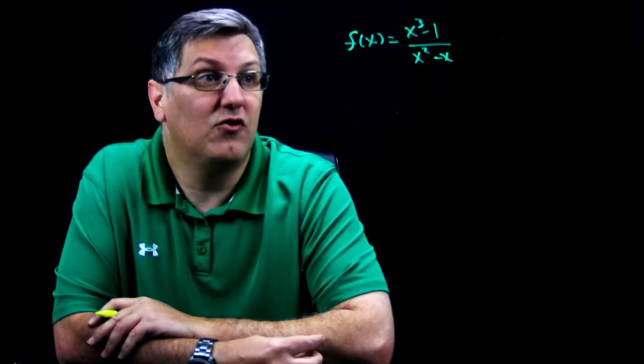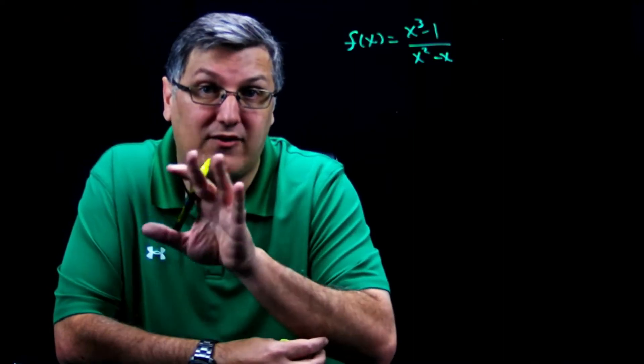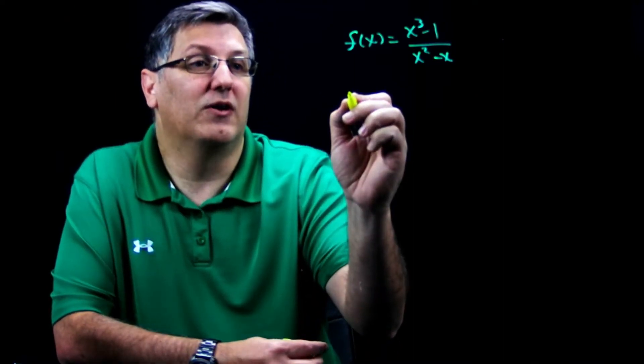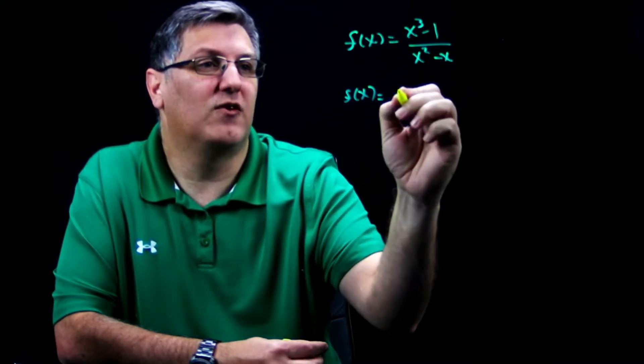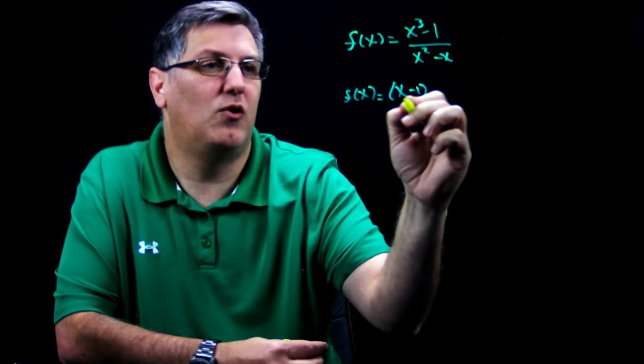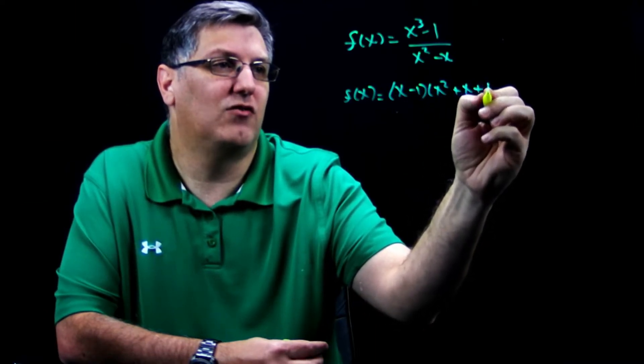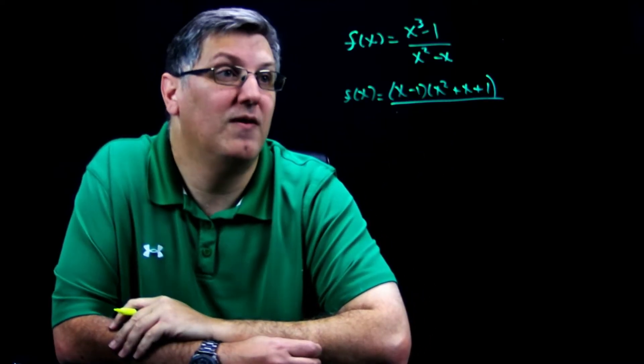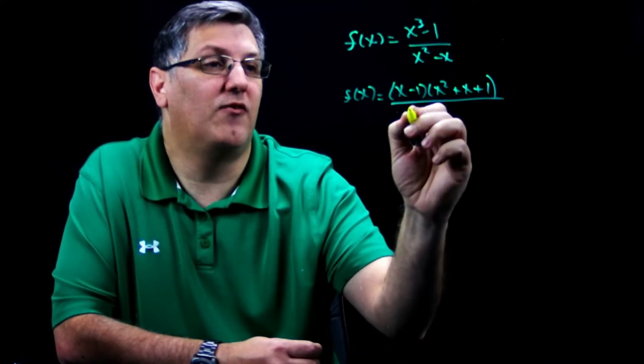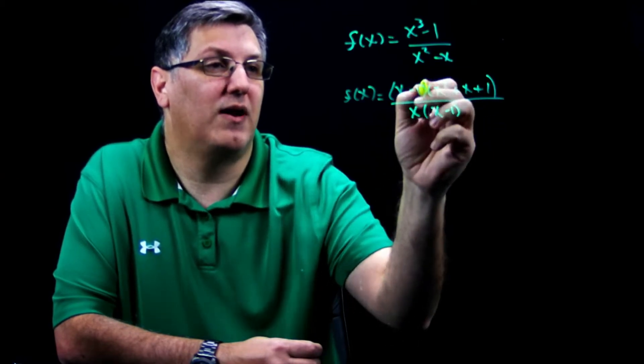So first and foremost, let's factor everything because that's going to be our rule. Factor everything. All right, so here we go. f(x) equals, well this is a difference of cubes, so this is going to give me x minus one over x squared plus x plus one, special factor you should have memorized. And then the bottom has the greatest common factor of x times x minus one. Hey look, my x minus one's cancel.